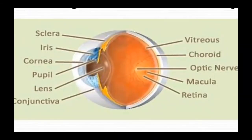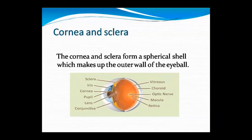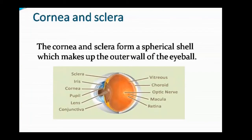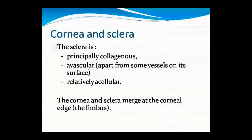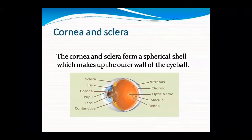You can see the sclera and cornea, which together form a spherical shell or the outer wall of the eye. The sclera is principally collagenous in nature, with no blood vessels — it is avascular apart from some vessels on its surface. The cornea and sclera merge at a corneal edge called the limbus.